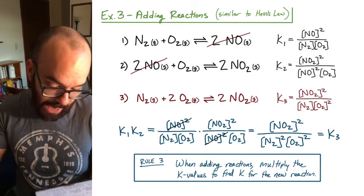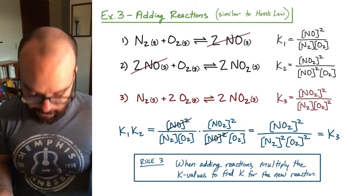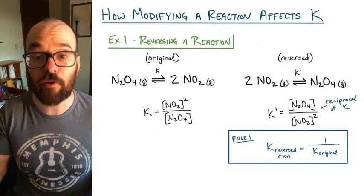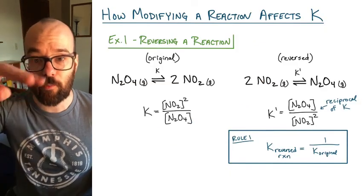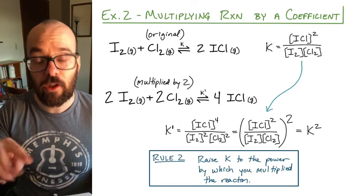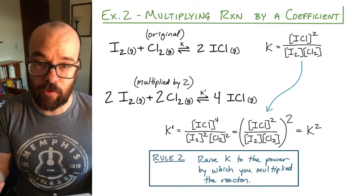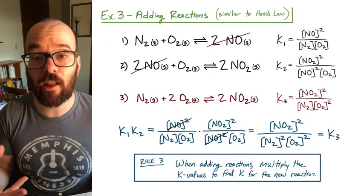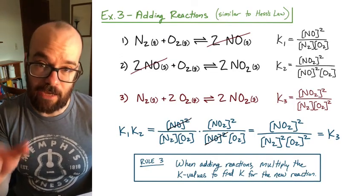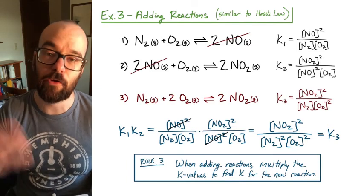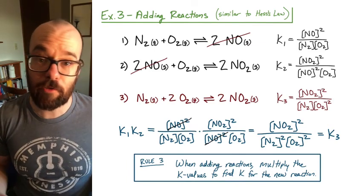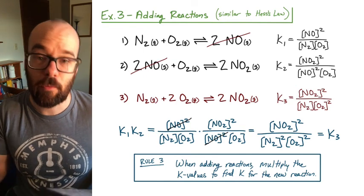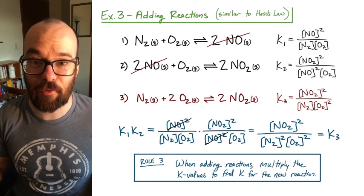So those were our three rules. First, if you reverse the reaction, take the reciprocal of the K value. Second, if you multiply a reaction by a coefficient, raise the K value to the power you multiplied by. And finally, whenever you add reactions together, multiply the K values to find the K value of the new reaction. If you know those three rules, you can calculate whatever new K value you need from the K values given in a problem. Thanks for watching.